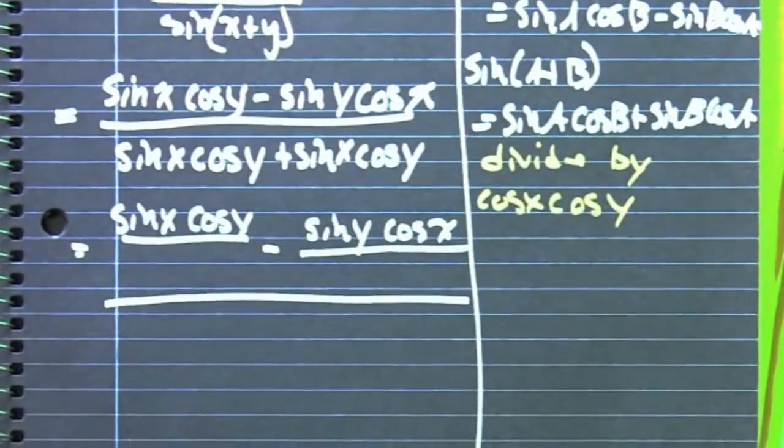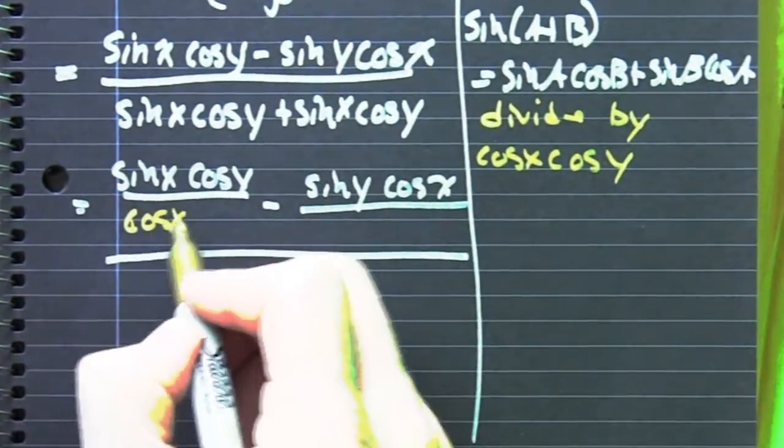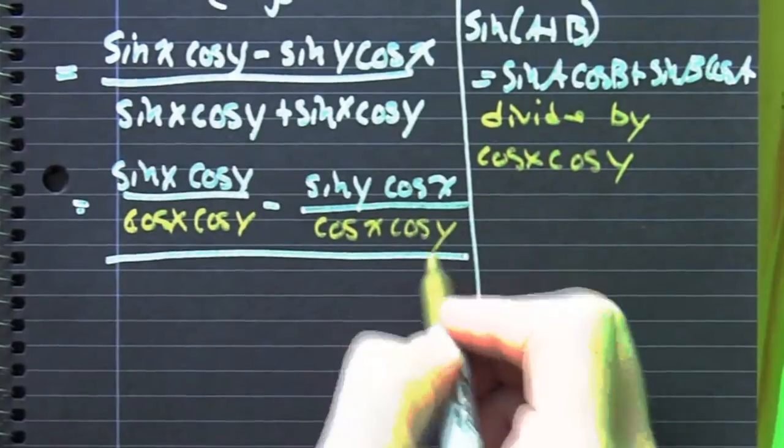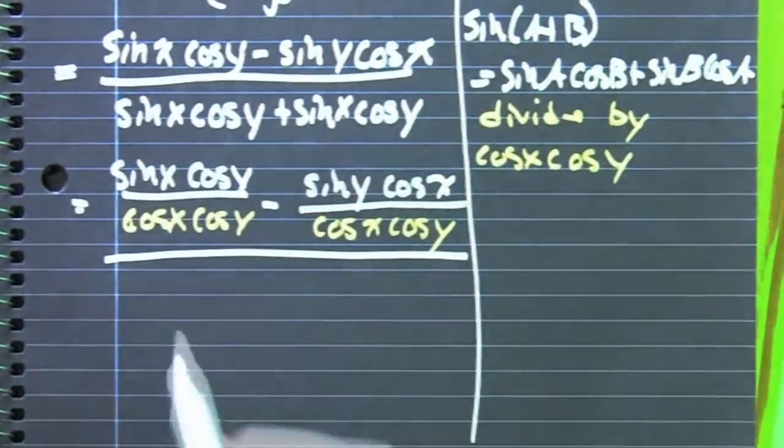In the numerator, we take sine x cosine y and we divide it by cosine x cosine y minus the same thing. Then do that to the denominator too.